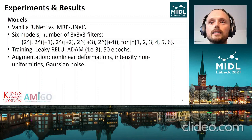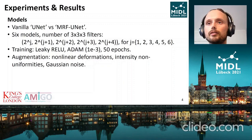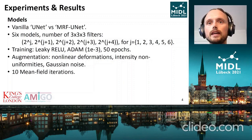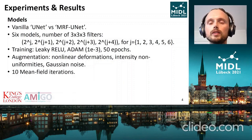Since our datasets are very small, we use different augmentation techniques such as non-linear deformations, noise, and intensity non-uniformities. And for the MRF U-Net, we use ten mean field iterations.